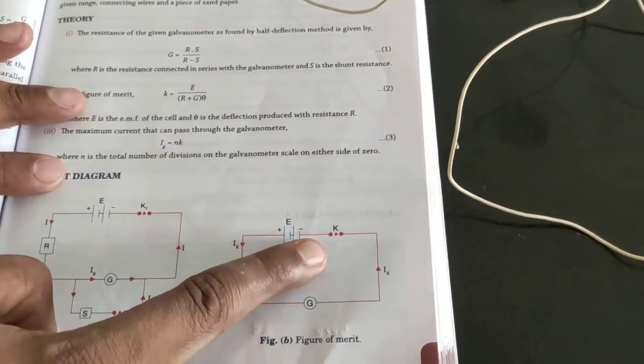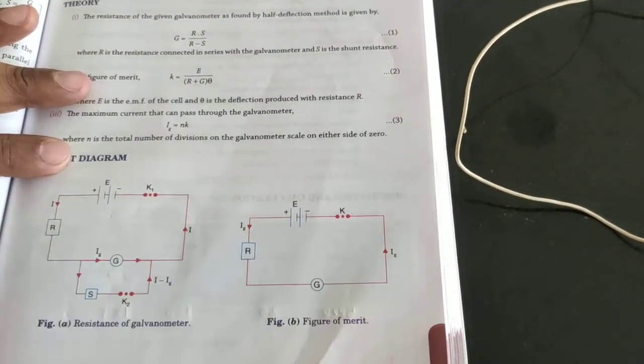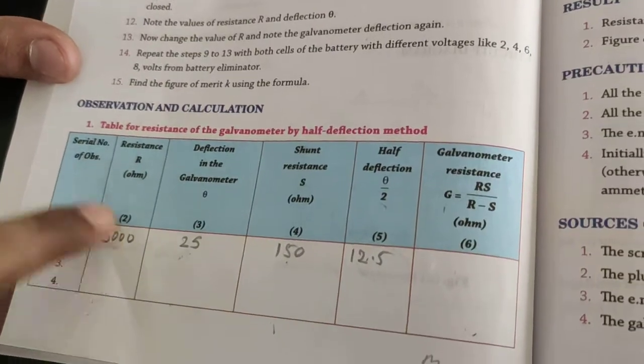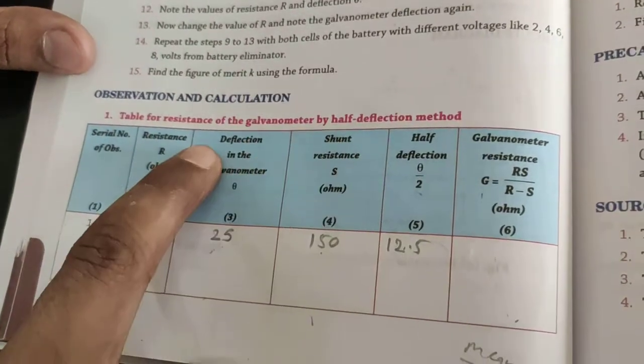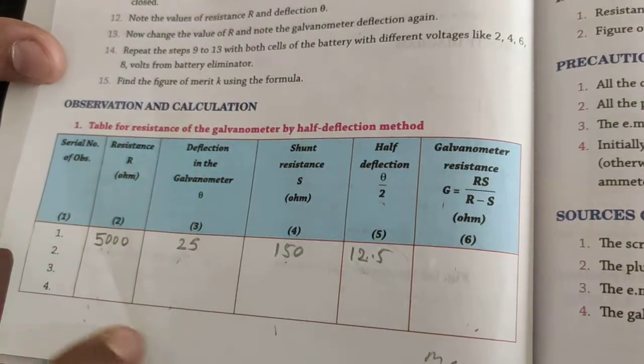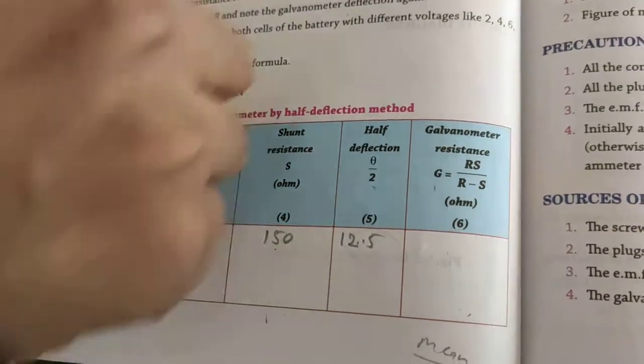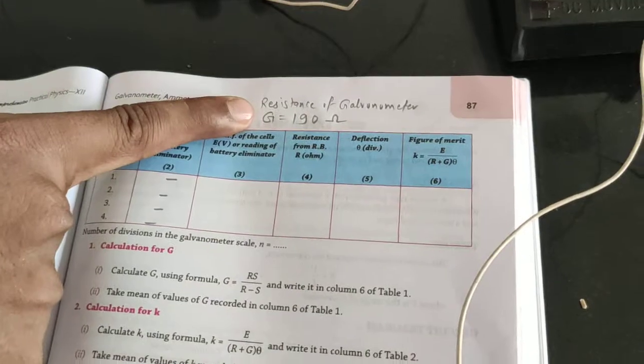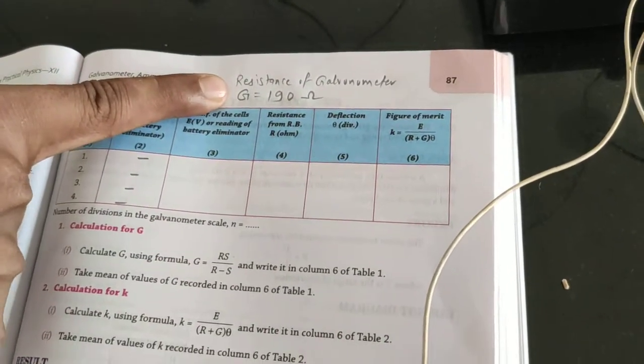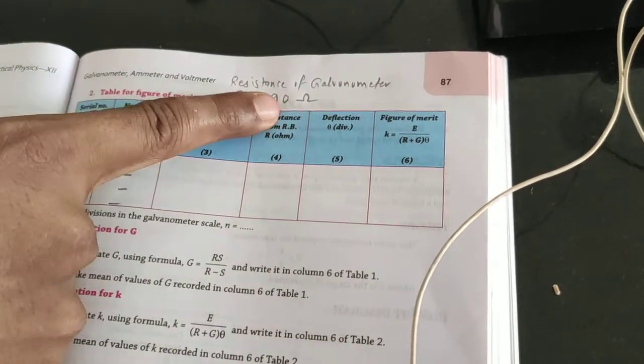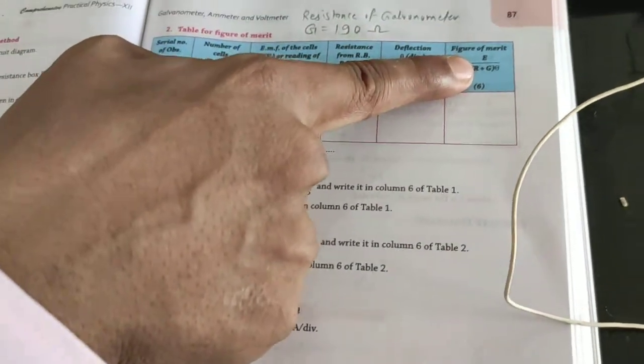Here this is the first table to find the resistance of galvanometer. We have calculated this resistance of galvanometer and got the value of resistance by taking the mean of all the readings - that is 190 ohm. This value we have to use in this calculation to find the figure of merit of the galvanometer.